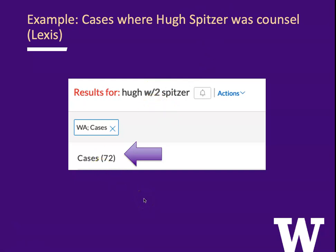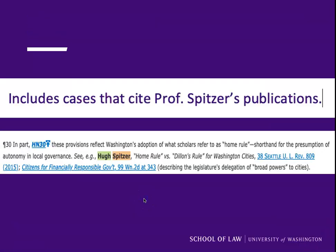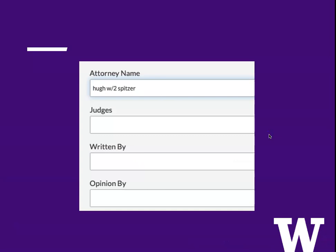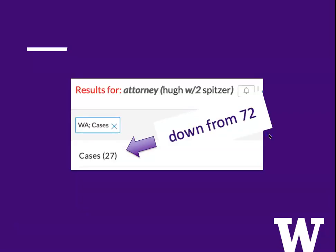Has he been counsel for 72 cases? Well, it includes cases that cite his publications. For instance, here's one citing an article he wrote in the Seattle University Law Review — so it's interesting, but it's not where he was counsel. We go into the advanced search template and we see that there's an option for searching by attorney name. Now we see 27 cases, down from 72 — much more efficient.